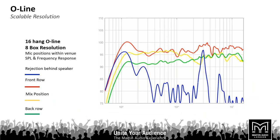Looking at that in graph form: here we have a 16-box hang of O-Line at eight-box resolution. We split the array in half — the top eight cabinets are all fed the same DSP, and the bottom eight are fed their own DSP. The red, yellow, and green traces represent the audience positions: red is the front, yellow is the mix position, and green is the back of the audience.